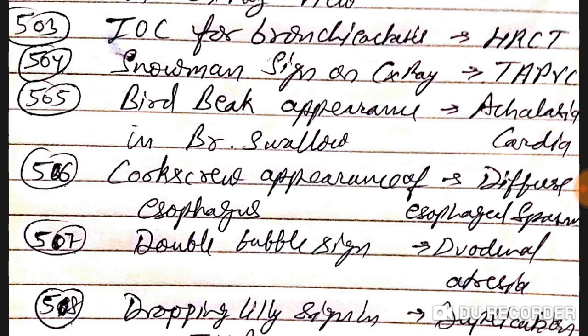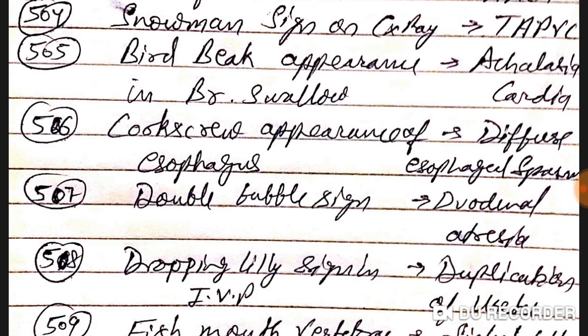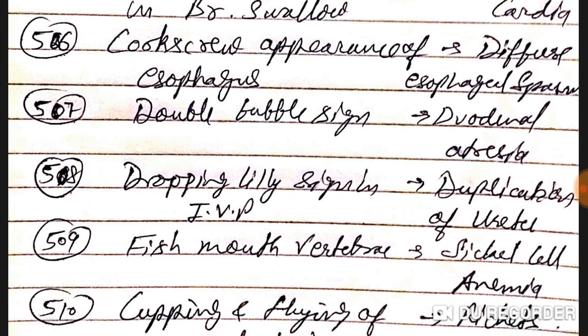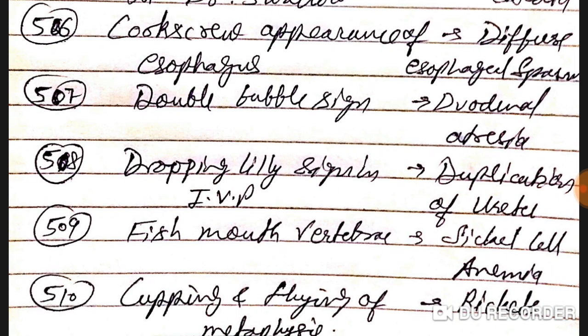Investigation of choice for bronchiectasis is HRCT — high-resolution computed tomography. Snowman sign on chest X-ray is seen in TAPVC. Big bird appearance in barium swallow is seen in Achalasia cardia. Corkscrew appearance of the esophagus is seen in diffuse esophageal spasm.